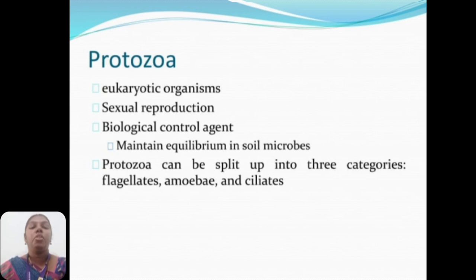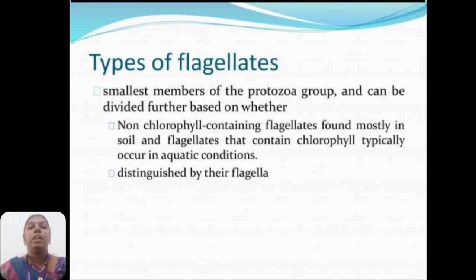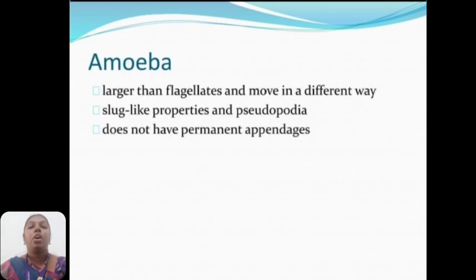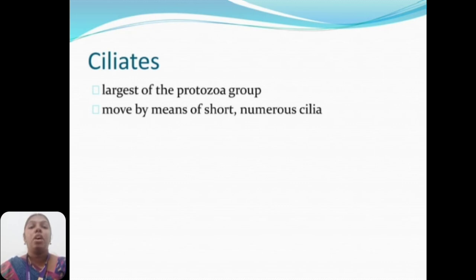Protozoa are eukaryotic organisms with sexual reproduction; they act as biological control agents and maintain equilibrium in soil microbes. Protozoa can be split into three categories: flagellates, amoeba, and ciliates. Flagellates are small members of the protozoa group, distinguished by their flagella — non-chlorophyll-containing flagellates are found mostly in soil, while those containing chlorophyll typically occur in aquatic conditions. Amoeba are larger than flagellates and move in a slug-like manner using pseudopodia and do not have permanent appendages. Ciliates are the largest of the protozoa group and move by means of short, numerous cilia.